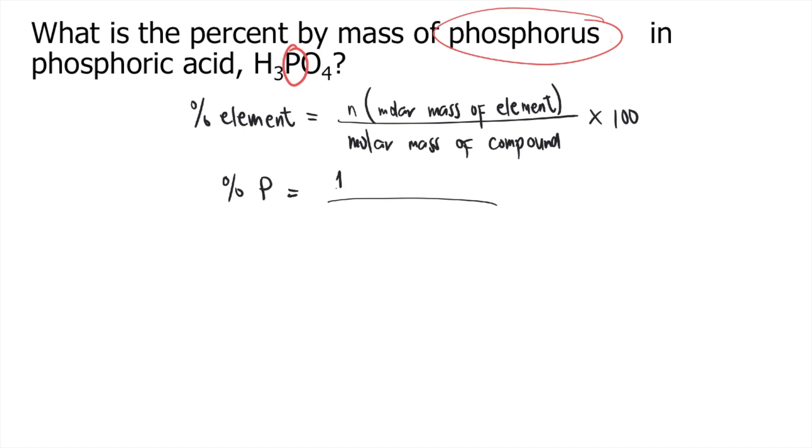So N is 1 times the molar mass of the element. If you check your periodic table of elements, the molar mass of phosphorus is 30.97 grams per mole divided by the molar mass of the compound.